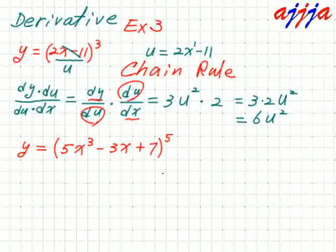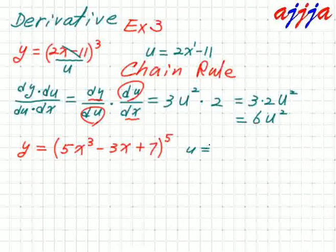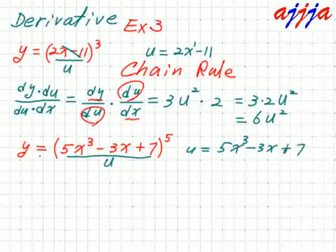All right, one more example of the chain rule. Let's try this big one. We're going to borrow u again — you can use b, a, whatever. So u equals 5x to the third power minus 3x plus 7.